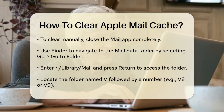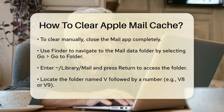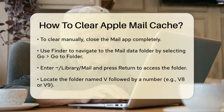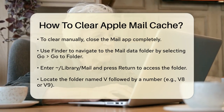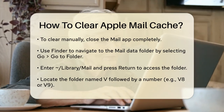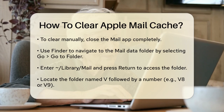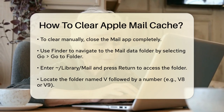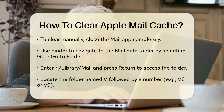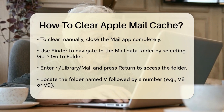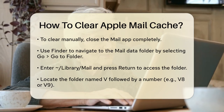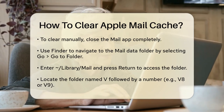Next, open a Finder window and click Go at the top of the screen, then select Go to Folder. In the text box that appears, type ~/Library/Mail and press Return. This will take you to the folder where your Mail app stores its data. Look for a folder named V followed by a number, such as V8 or V9.